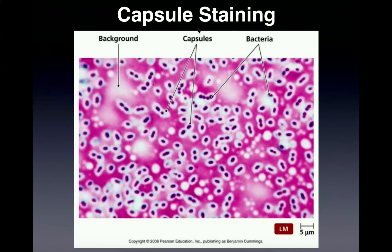So what is a capsule? Some bacteria have a slimy layer outside of their cell wall. This slimy layer allows these cells to stick to other cells, presumably cells of their own species, and other surfaces such as metal. And this actually helps the bacteria survive and potentially evade immune defenses.